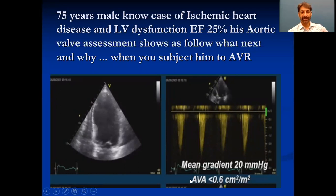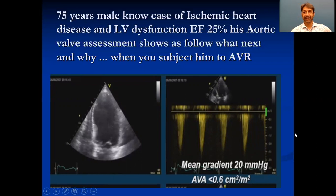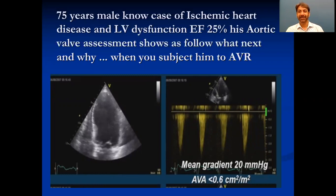If you see here, the mean gradient is 20 mmHg, and the aortic valve area is less than 0.6 cm². So according to the area, this is severe. But according to the gradient, it's not severe because the gradient is just 20 mmHg. And if you look at the ejection fraction, it is 25.